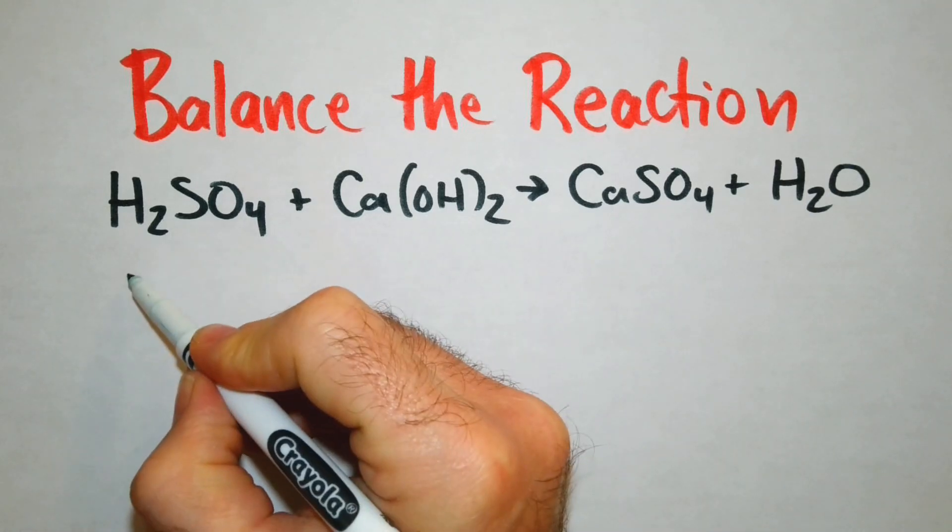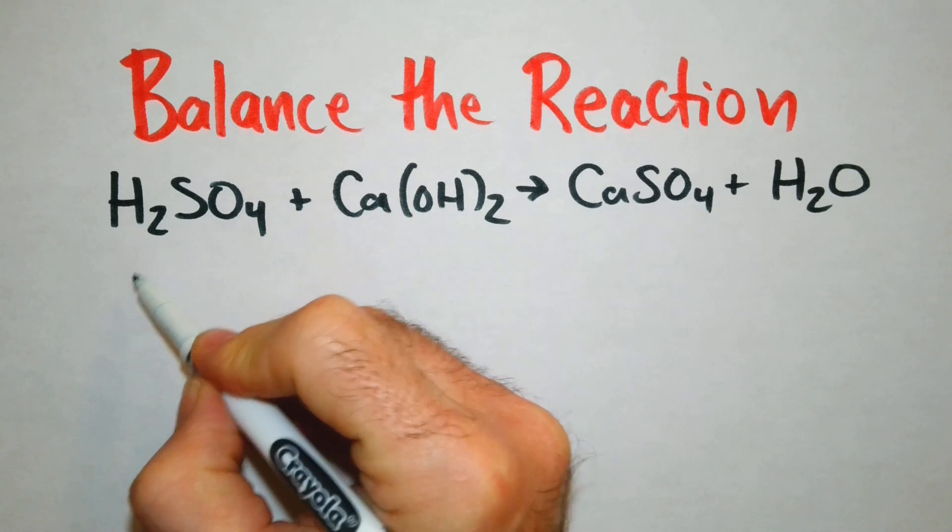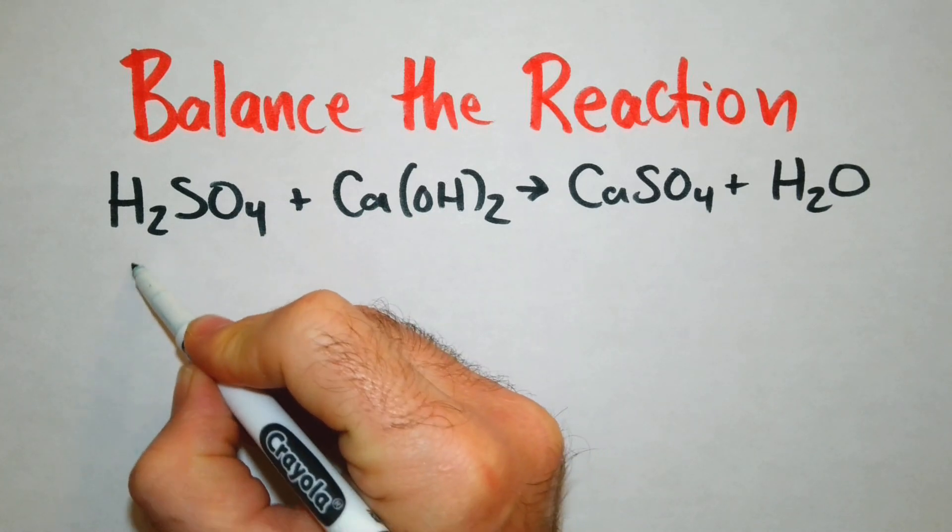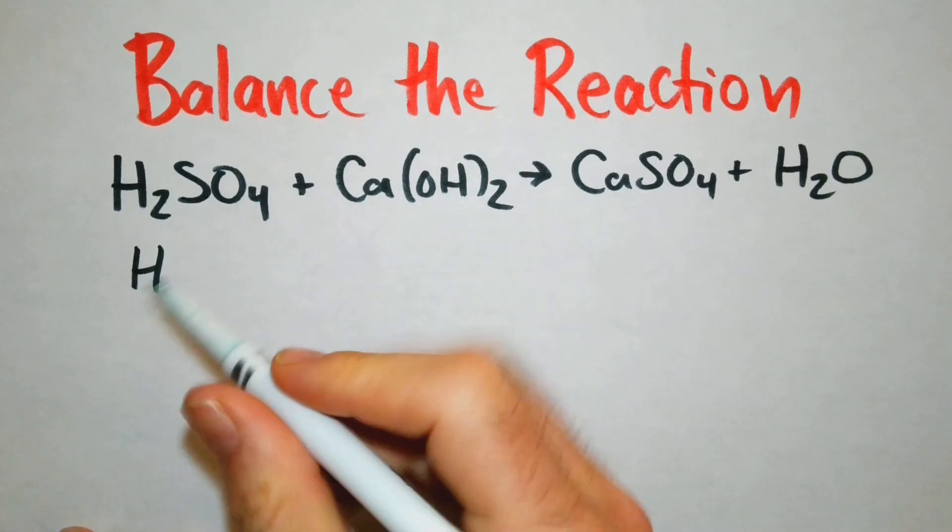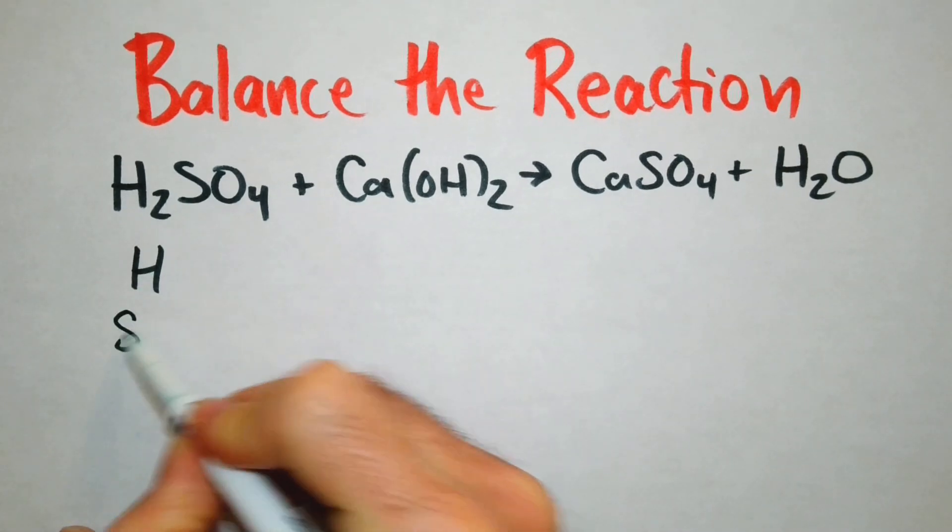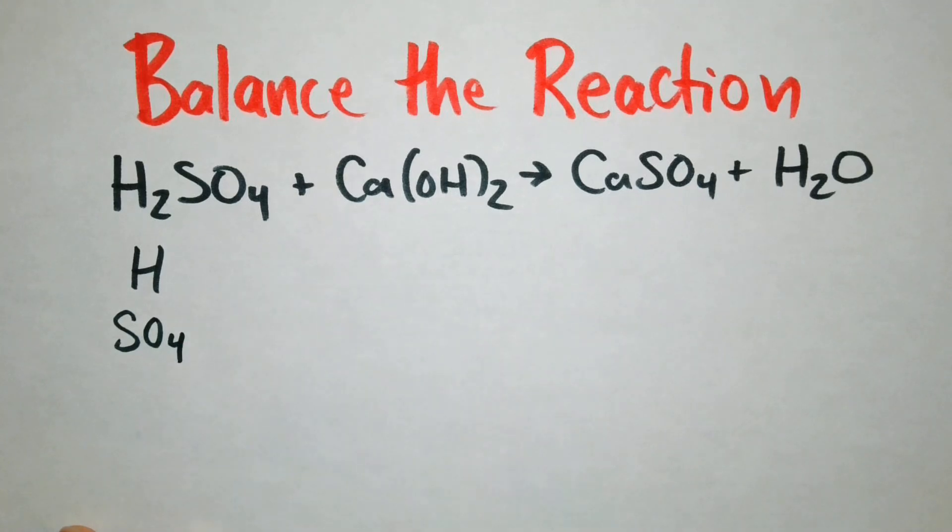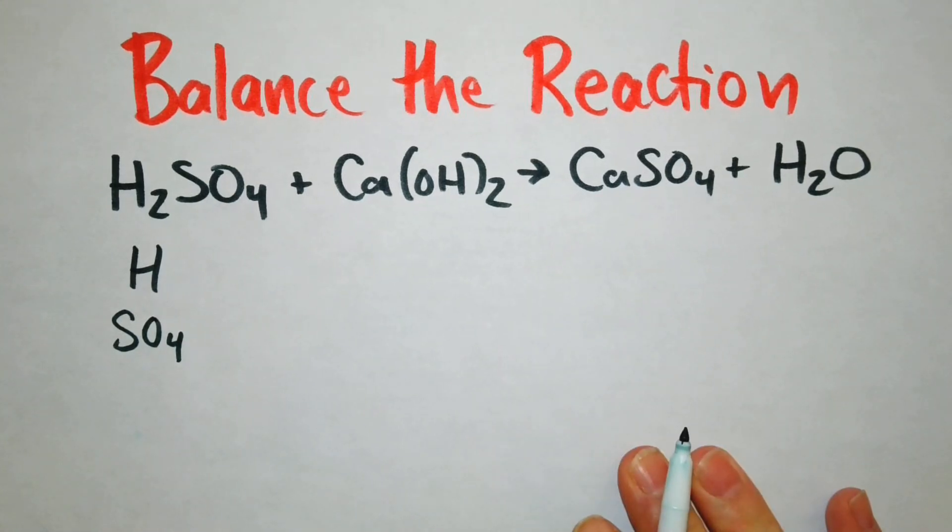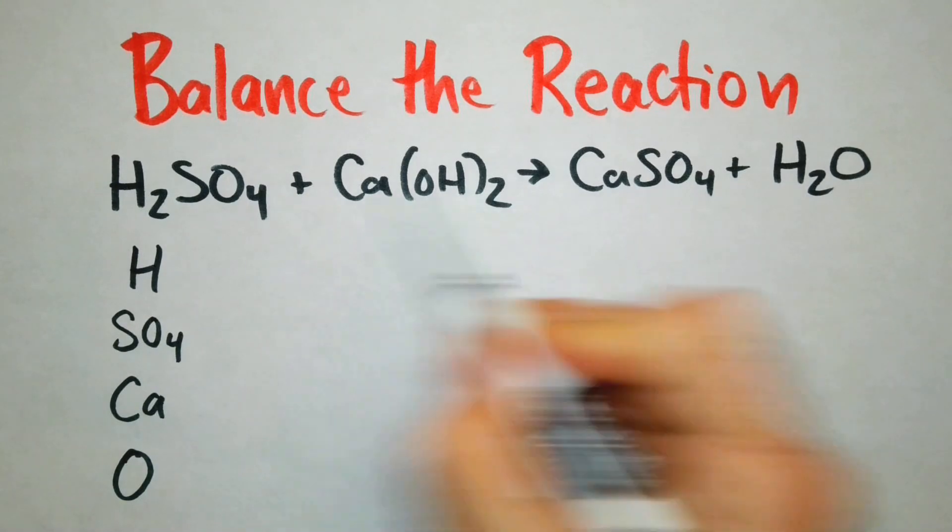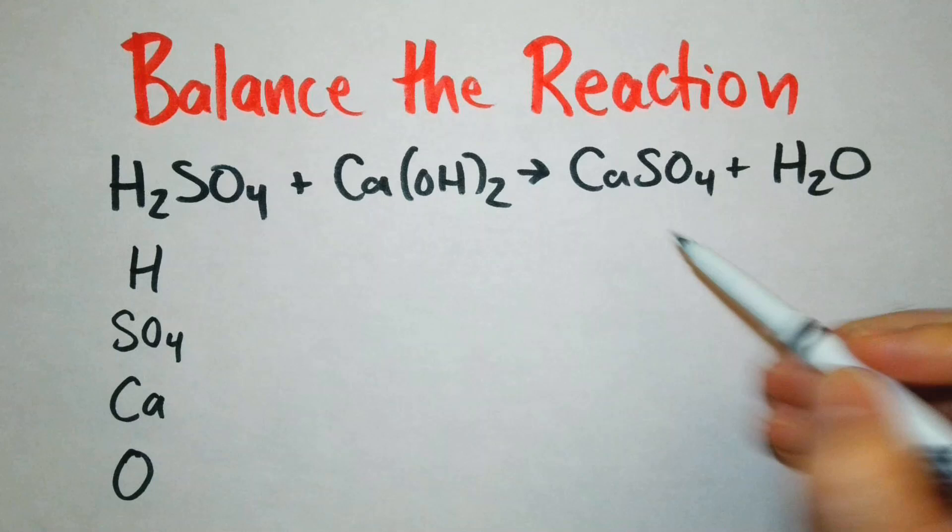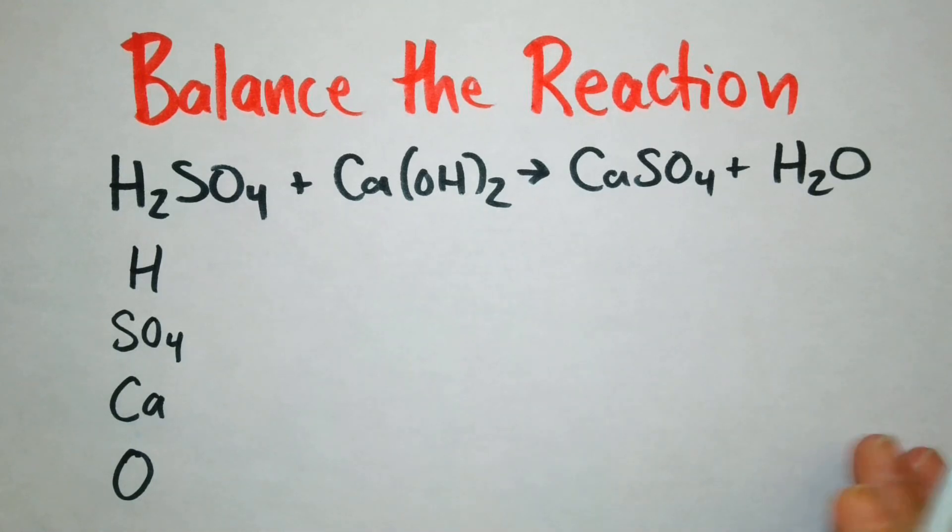I'm going to write each element under the reactants side. So we can keep track that this SO4 we're going to consider that as one item since they're grouped together and traveling on both sides. Then we have our calcium and then we have an oxygen. This hydrogen I'm keeping it grouped up with this one over here because it's not really traveling on both sides of the equation.